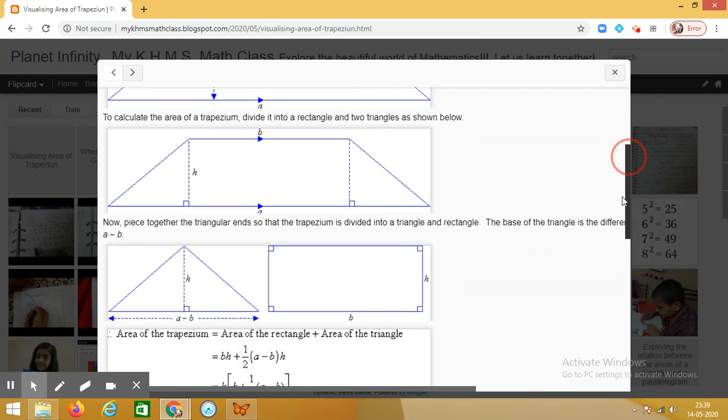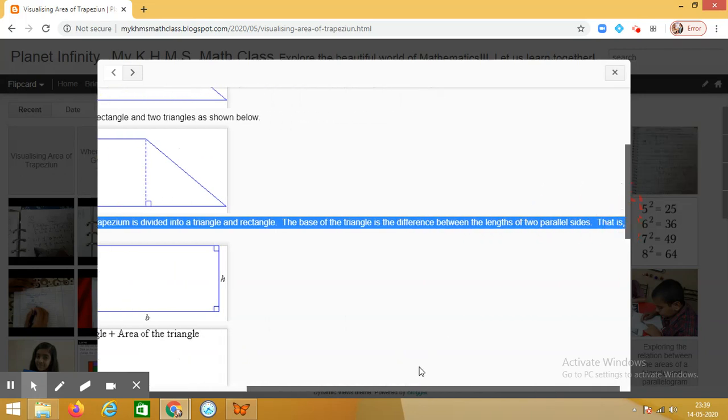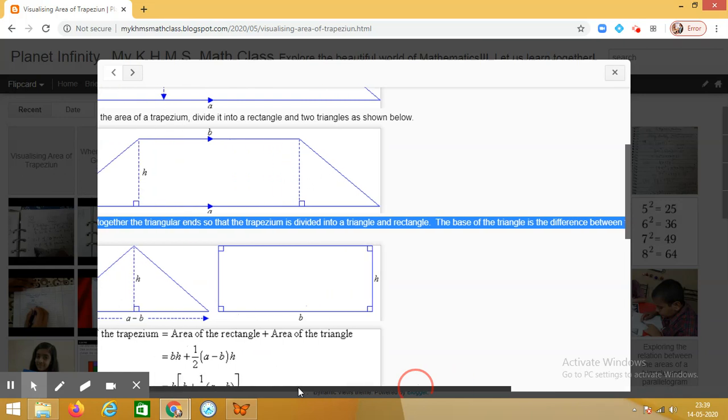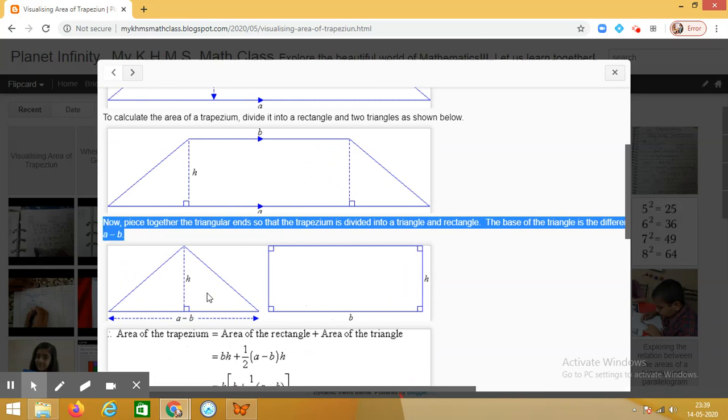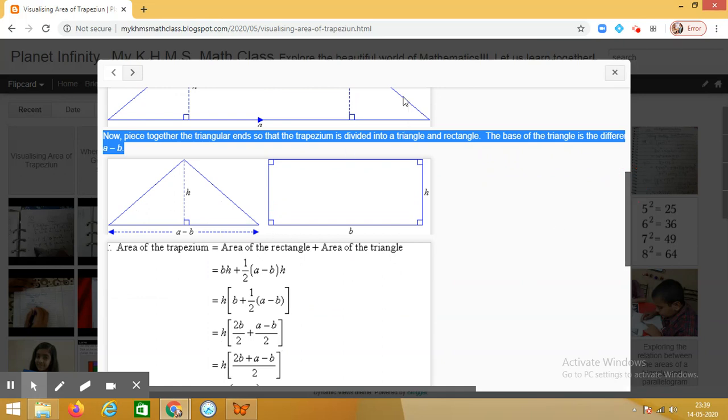What you have to do is first you have to drop perpendiculars and you can see that the trapezium can be divided into a rectangle and two right triangles. In the next diagram what we have done is we have taken the triangle which has been formed by joining the two right triangles and a rectangle.